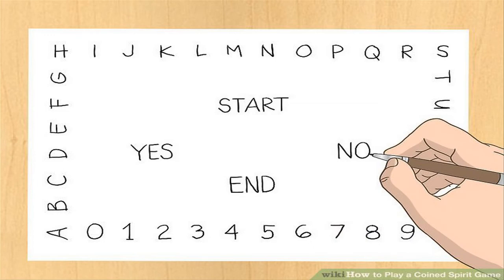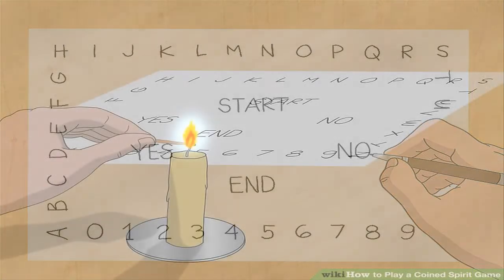Add words such as start, end, yes, or no. These will provide easier answer options to simple questions. It's always faster to ask a yes or no question than one that requires more explanation. You can use the start and end options to call a spirit or end the game.